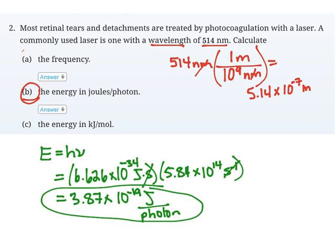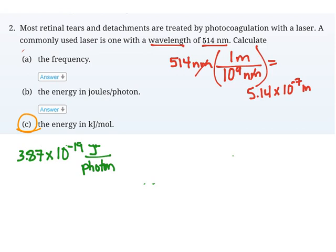Looking at part C, I want to get the energy in kilojoules per mole, so I have some conversions to do. Just rewriting what I have for part B, I have my energy in joules per photon, which is the unit I always get when I plug into E equals Planck's constant times frequency. From here, it's just dimensional analysis, using conversion factors to go from one unit to another.